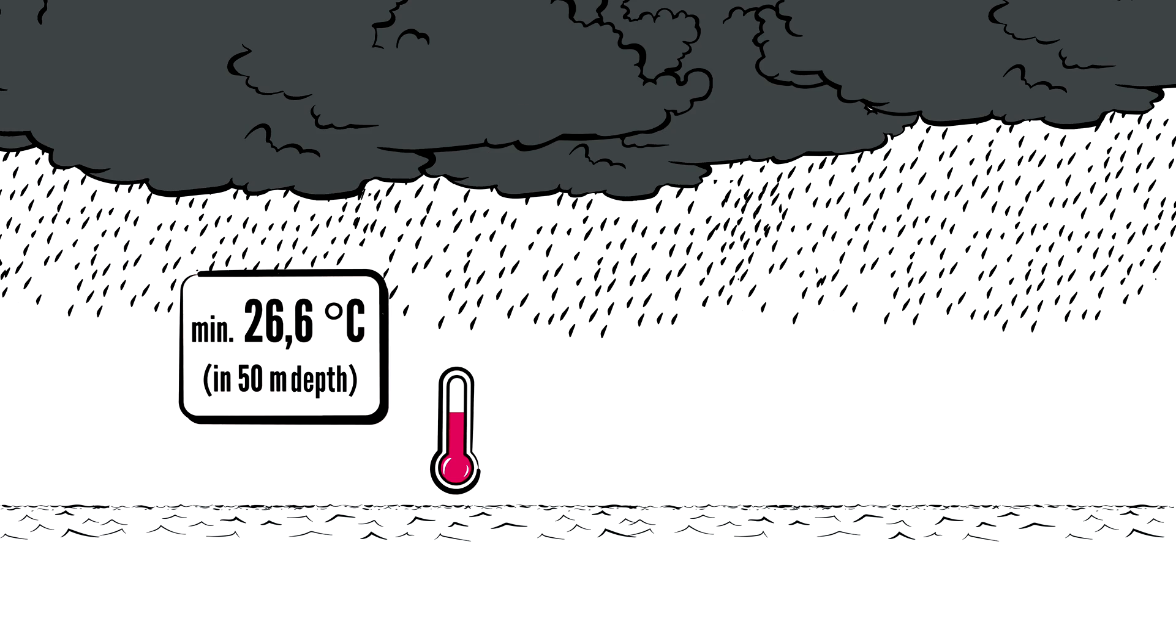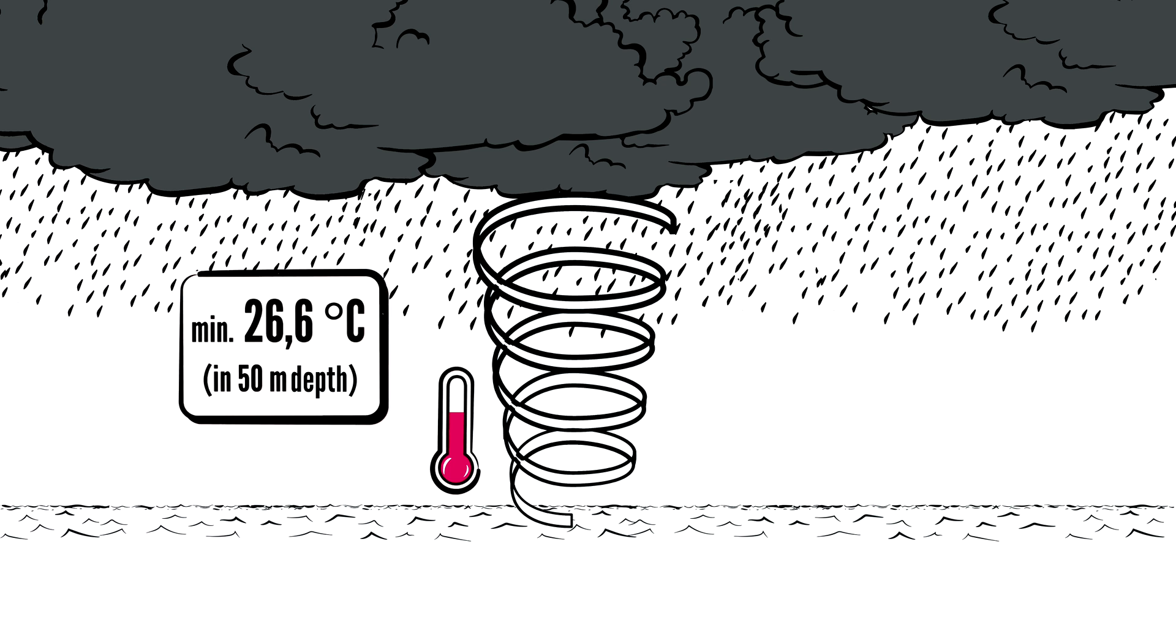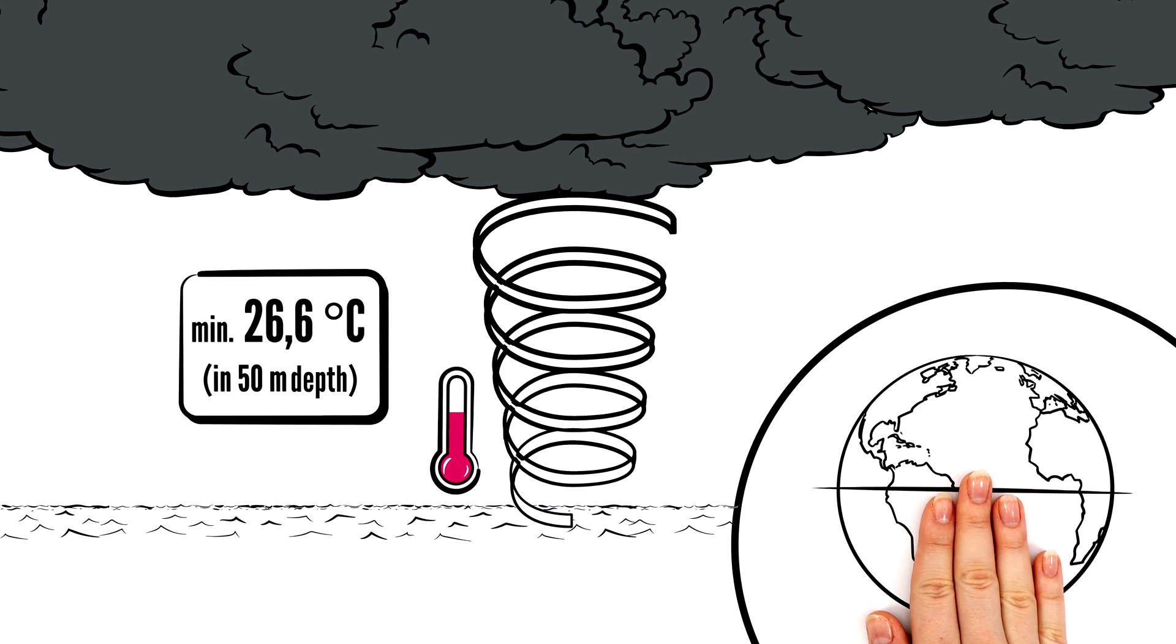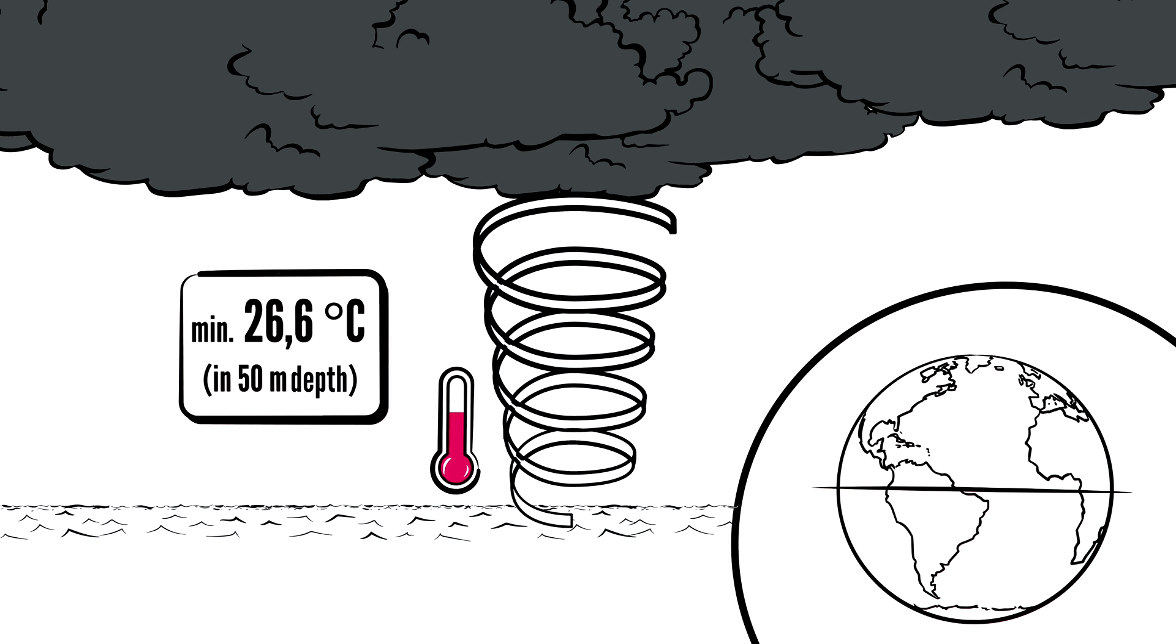In extreme cases, there's a vortex. But here, it isn't the wind direction that's responsible for the rotation, but the Earth's revolution. In the Northern Hemisphere, the vortex turns counterclockwise, and in the Southern Hemisphere, clockwise.